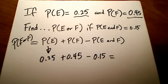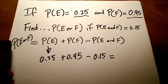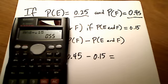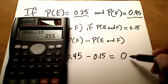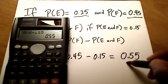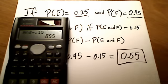So this problem is really just a simple calculation: 0.25 plus 0.45 minus 0.15. Working this out on a calculator gives an answer of 0.55. So the probability of E or F is 0.55.